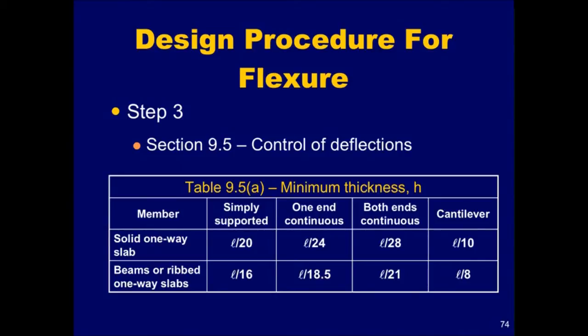The span length is defined in section 8.7. Note that the values given in the table are for members with normal weight concrete with a density of 145 pounds per cubic foot and grade 60 reinforcement. Footnotes to the table in the code provide modification factors that are to be used for other conditions. It is important once again to consider economical formwork when choosing a member thickness from Table 9.5a.